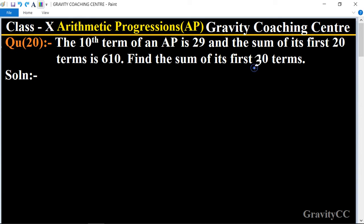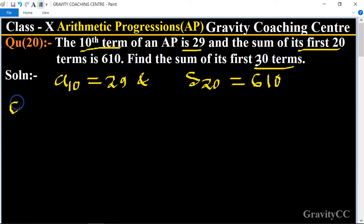This question is given that the 10th term is 29, means a₁₀ = 29, and the sum of its first 20 terms means S₂₀ is given equal to 610. a₁₀ means a + 9d = 29.